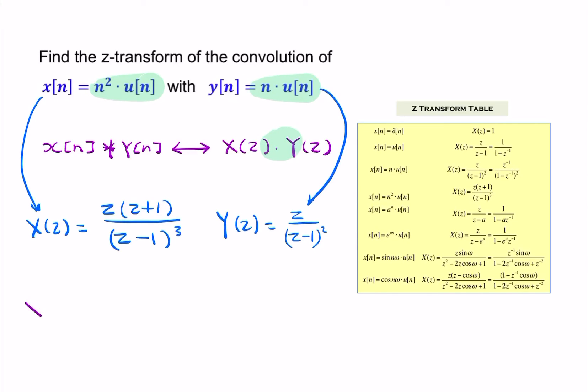The question is the Z-transform of the convolution. We find the product by multiplying these two together. X of Z times Y of Z equals... we're multiplying this expression by this expression. So Z squared times (Z plus 1) over (Z minus 1) to the power 5.